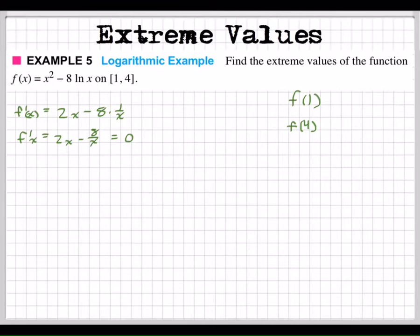Okay, so if I multiply everything by x, then I get 2x squared minus 8 equals 0, right? And then I'm going to add 8 to both sides, so I'll have 8 right there and 2x squared right there. And then I'm going to divide both sides by 2, and then I finally get x equals plus or minus 2.